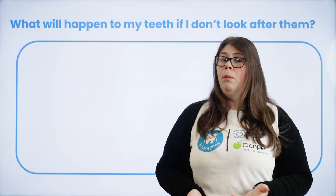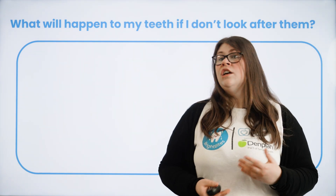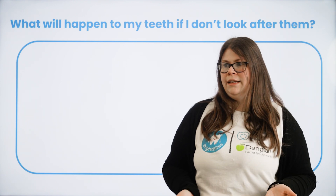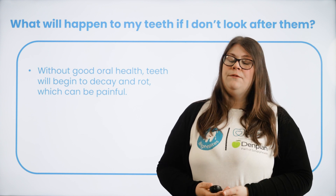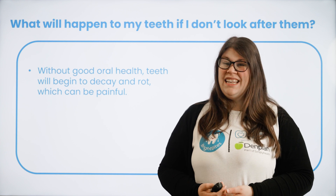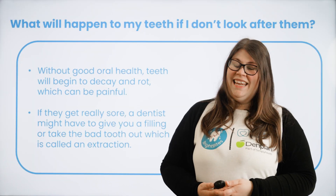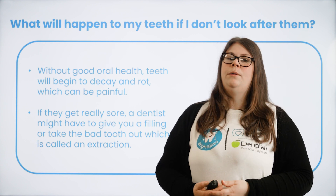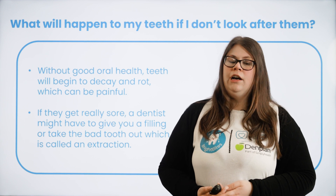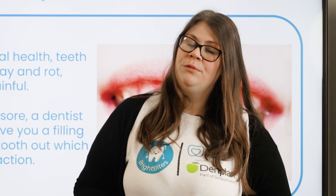Now ask the children what will happen to their teeth if they don't look after them — if they drink lots of sugary drinks, eat unhealthy foods, and don't brush often enough. Then explain that without good oral health, teeth can begin to decay and rot, which could be quite painful. If teeth get really sore, a dentist might need to give a filling or remove a bad tooth — a process called an extraction. Show an image of what teeth could look like without proper care.